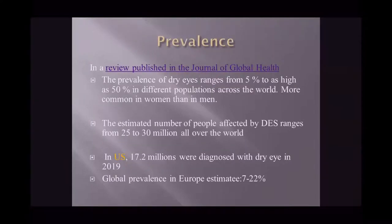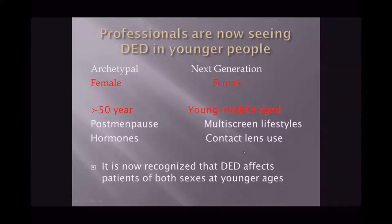The prevalence of dry eye ranges from 5% to 50% in different populations across the world, and is more common in women than men. The estimated number affected is 25 to 30 million worldwide. In the United States alone, 17 million were diagnosed with dry eye last year. Global prevalence in Europe is estimated from 7% to 22%. Dry eye is notably found in females aged over 50 years, due to post-menopausal hormonal changes.